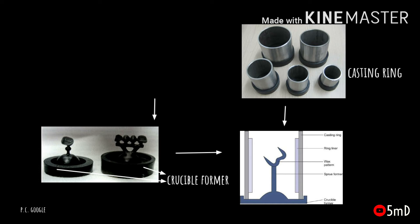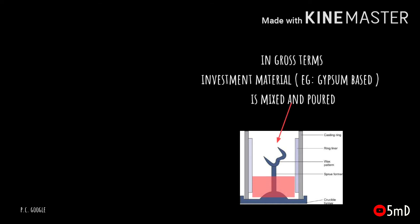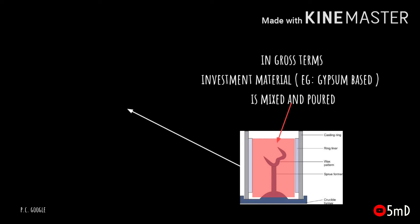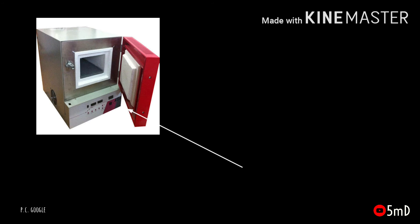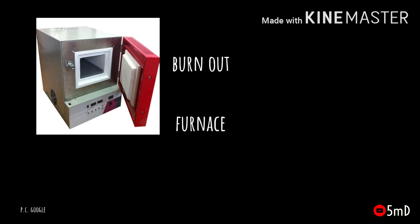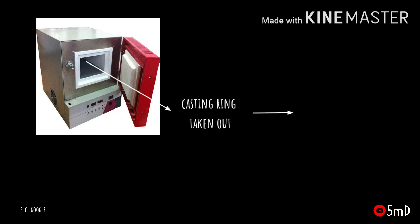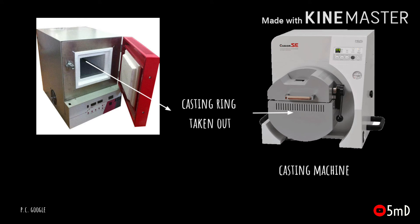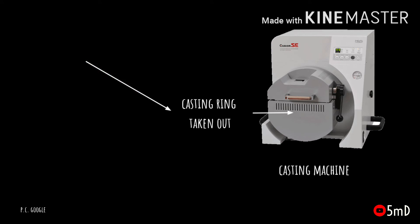The casting ring is filled with the investment material. After the investment material sets, the crucible former is removed, and this casting ring along with the wax pattern and the investment material is placed in the furnace for the wax to burn out and come out. After the burnout procedure, complete wax removal is ensured, and this casting ring is placed in a casting machine where casting is done — that is, molten metal is poured into the vacuum where the wax had been removed.